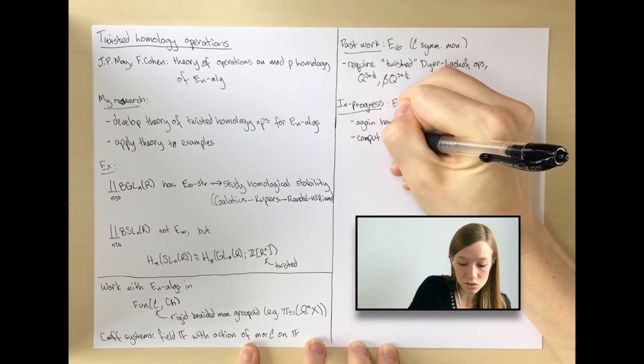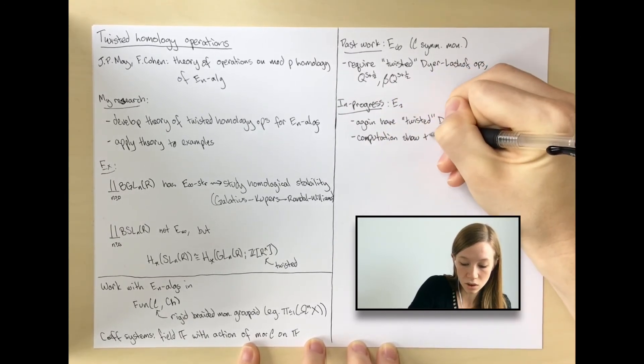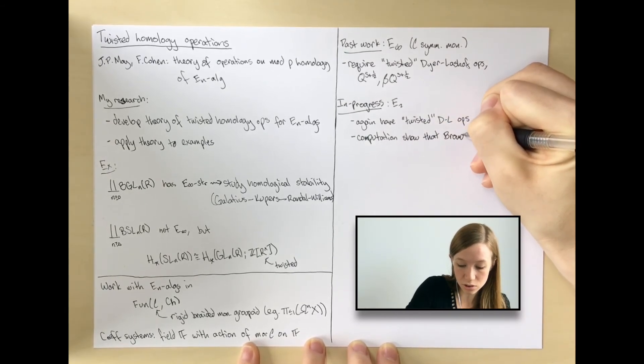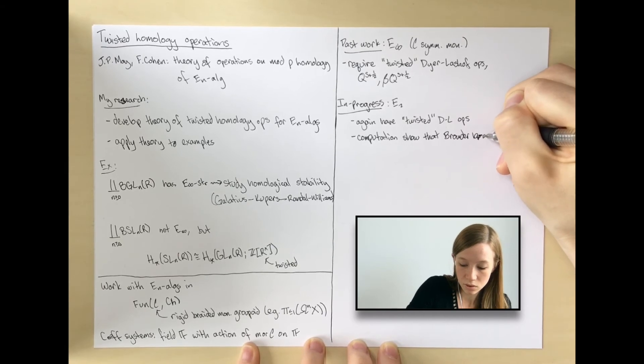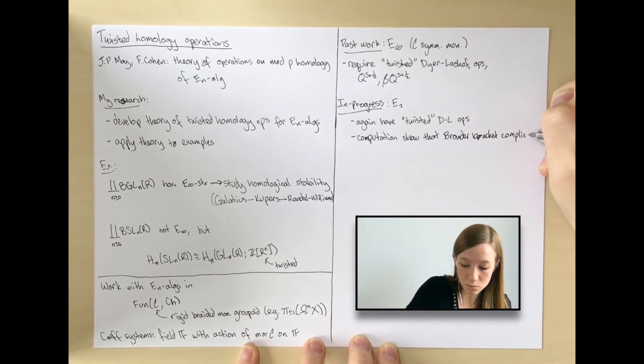I've done some computations to show that when you try to generalize the Browder bracket, the story becomes very complicated.